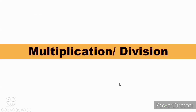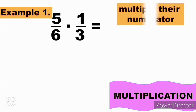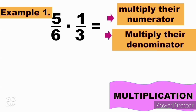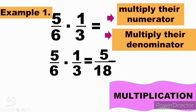Now let's proceed to multiplication and division of fractions. To multiply fractions — example: 5 over 6 times 1 over 3. We simply multiply their numerators together and multiply their denominators together. 5 times 1 is 5, and 6 times 3 is 18. Therefore, the answer is 5 over 18. That is how to multiply fractions.